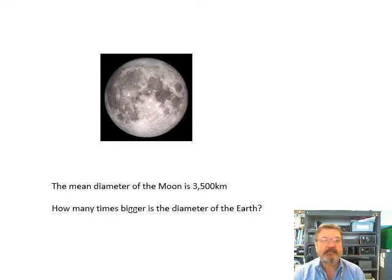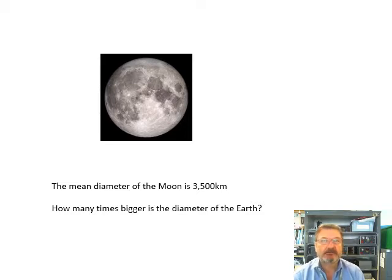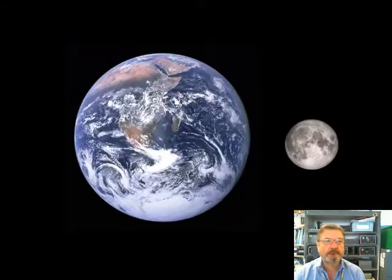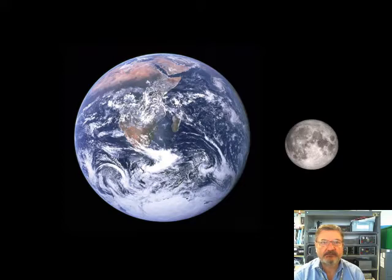The mean diameter of the moon is 3,500 kilometres. How many times bigger is the diameter of the Earth? You should remember from the last video — what's the diameter of the Earth, and how many times bigger is it than the moon? It's the kind of question you might be asked in the exam. The Earth is 13,000 kilometres, and the moon is 3,500 kilometres.